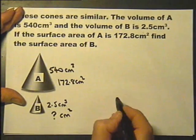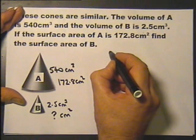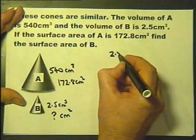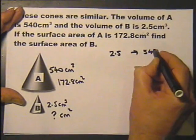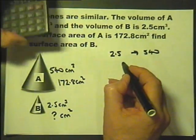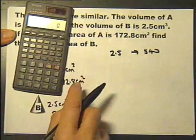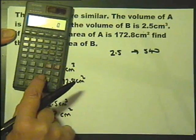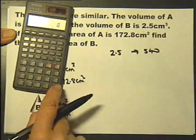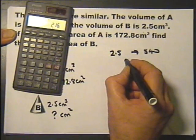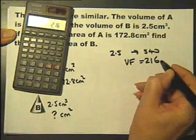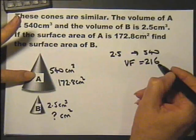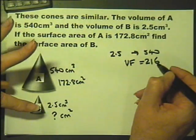Square centimeters. So, if we consider the enlargement between the volumes, 540 divided by 2.5, then the volume factor is 216. This volume is 216 times that volume.